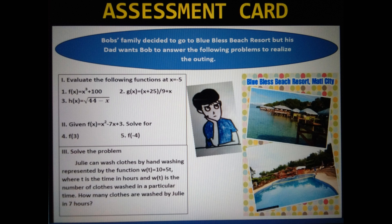Assessment Card 3. Bob's family decided to go to Blue Bless Beach Resort, but his dad wants Bob to answer the following problems to realize the outing.